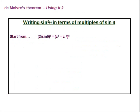So now we can tackle a question like this: writing sin⁵θ in terms of multiples of sinθ. We start from what we just established — that 2i·sinθ = z − z⁻¹ — but we raise this to the power of 5, and we apply the binomial theorem again.